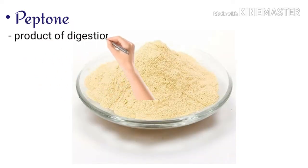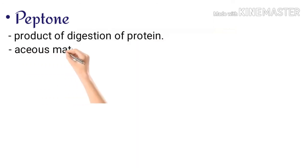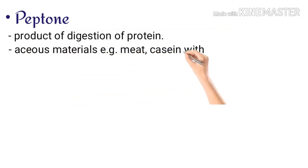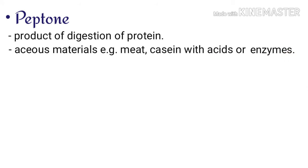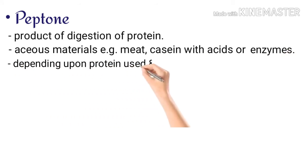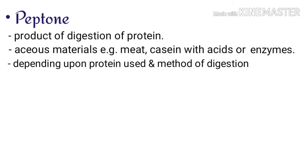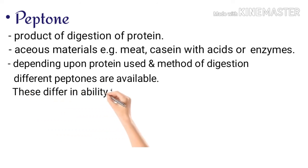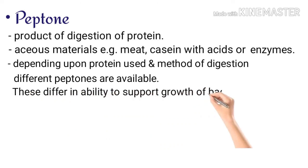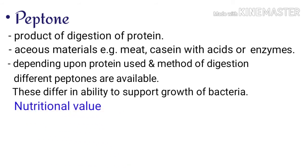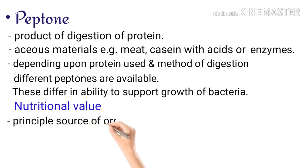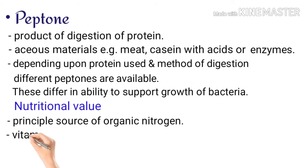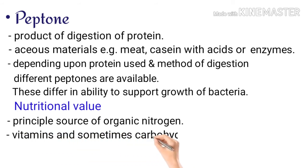Peptones are the product of digestion of protein from aqueous materials — for example, meat or casein — with acids or enzymes. Depending upon the protein used and the method of digestion, different peptones are available, and these differ in their ability to support the growth of bacteria. The nutritional value of peptones is that they are the principal source of organic nitrogen and vitamins, and sometimes carbohydrates are also present depending upon the protein digested.